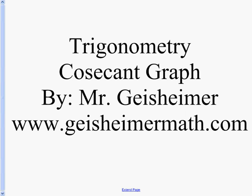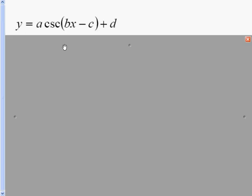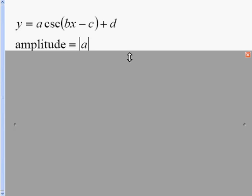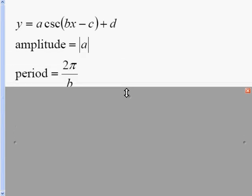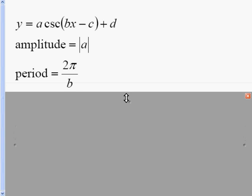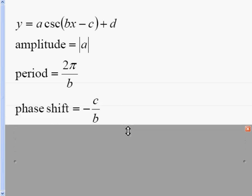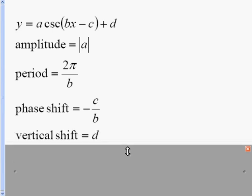I'm graphing a cosecant function. We'll start with the standard form of the cosecant function: y equals a cosecant of bx minus c, plus d. It's very similar to the sine and cosine curves, where the amplitude is the absolute value of a, the period is 2π over b, the phase shift is negative c over b — the opposite of the inside number divided by b — and the vertical shift is d.